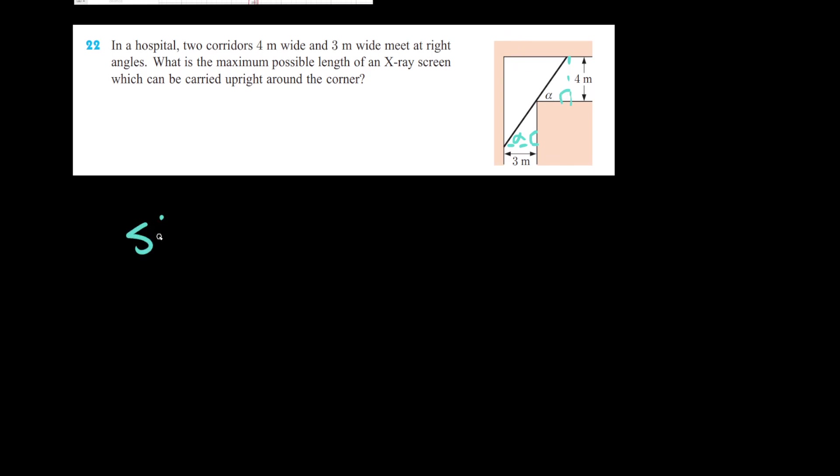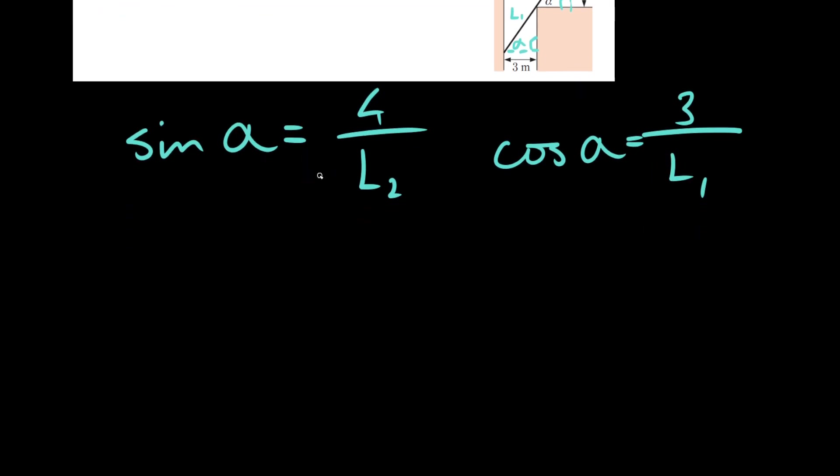We're going to notice that sine of alpha is equal to 4 over, let's call this L2, opposite over hypotenuse. And that cosine of alpha here is equal to adjacent over hypotenuse, 3 over L1. To solve for L1 and L2, we're going to multiply both sides and divide again. So we'll get that L1 is equal to 3 over cosine alpha. L2 is equal to 4 over sine alpha.